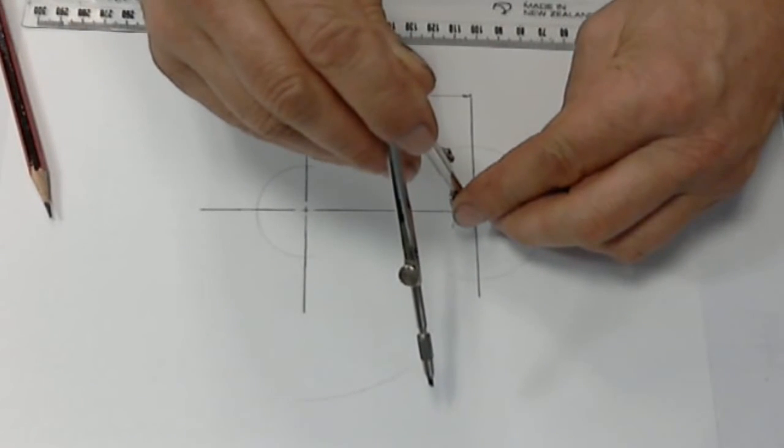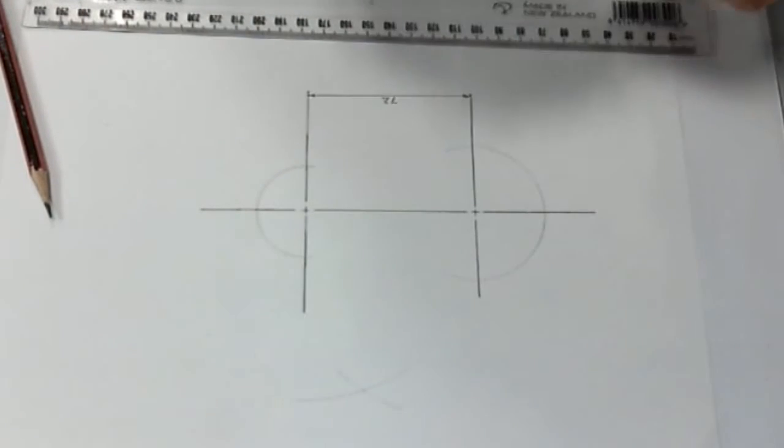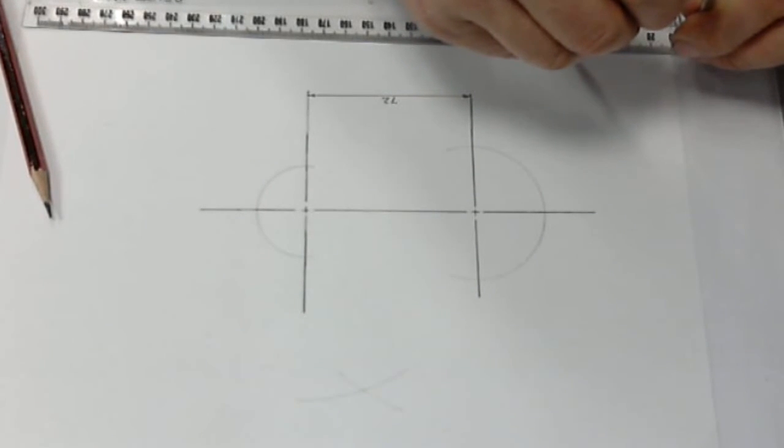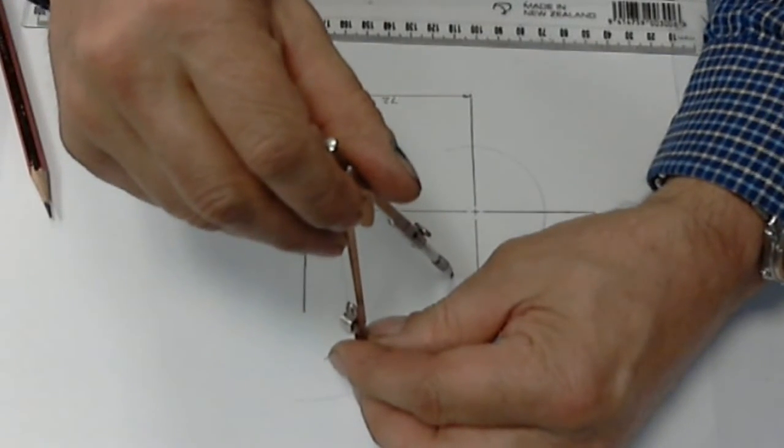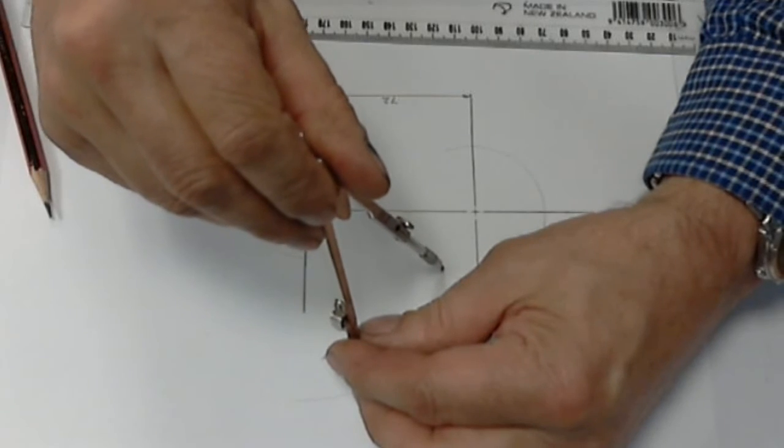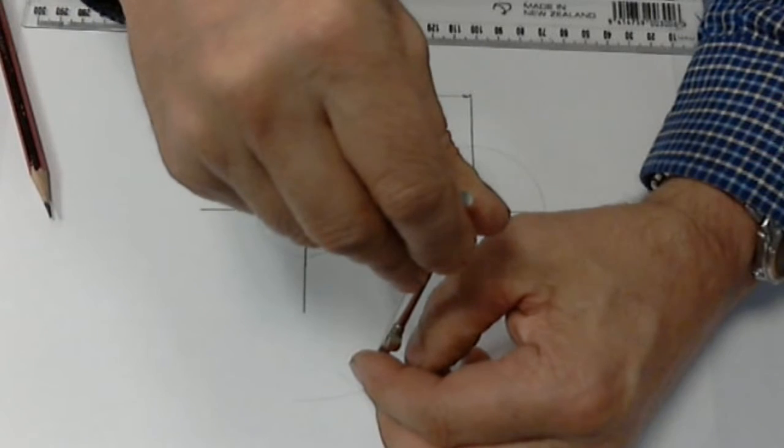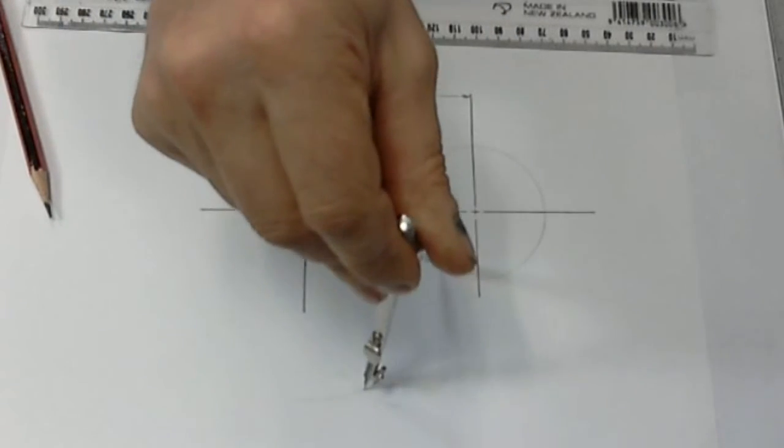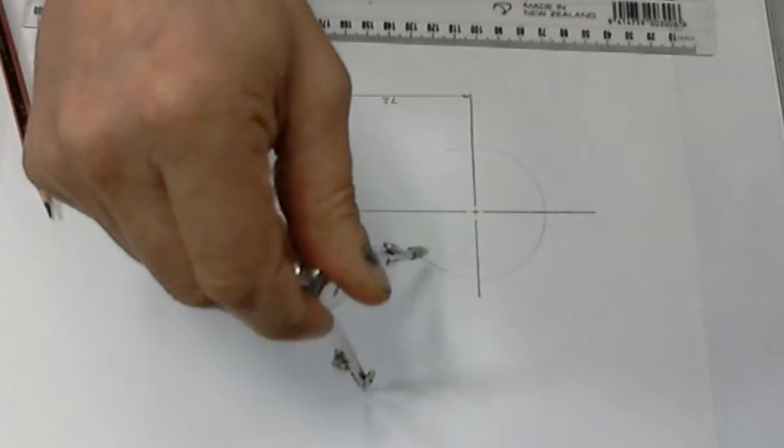So we swing that one out here and we can now reset our compass to our tangential radius which is 60 millimeters and it should be close. Sometimes there's a slight adjustment required basically down to accuracy of the original arcs. That's pretty good. So if we draw that arc in, that's complete.